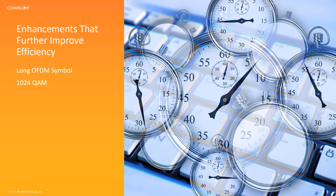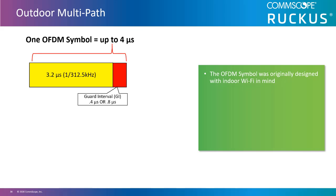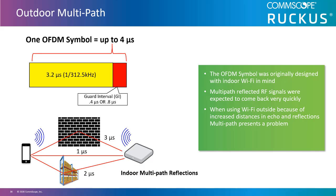In this section, we'll look at two other 802.11ax enhancements that improve efficiency: long OFDM symbol and 1024 QAM. The OFDM signal was originally designed with indoor Wi-Fi in mind, where multipath reflected RF signals were expected to come back very quickly. The pre-AX OFDM symbol was composed of a data portion 3.2 microseconds long, with a guard interval of 0.4 or 0.8 microseconds. When using Wi-Fi outside, because of increased distances and increased delay of reflections, multipath presents a problem. Long OFDM symbols help correct this problem.